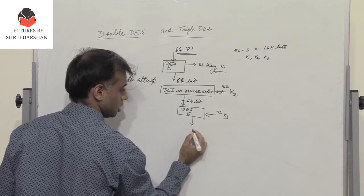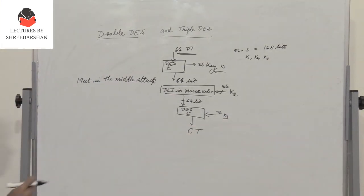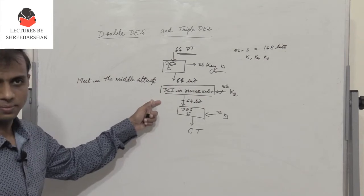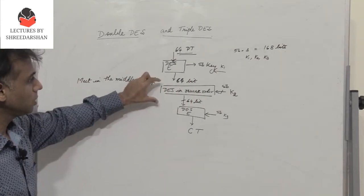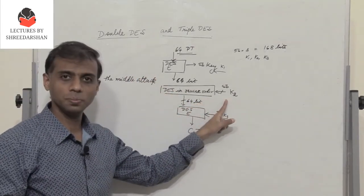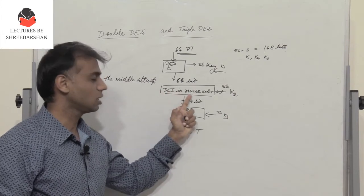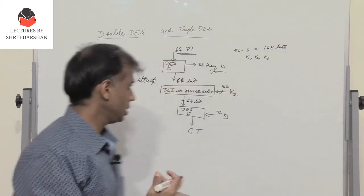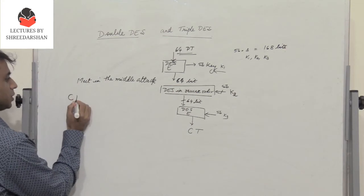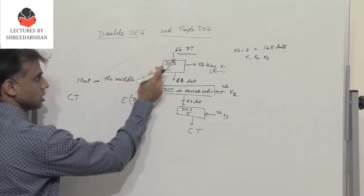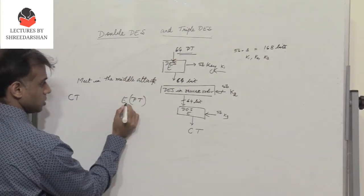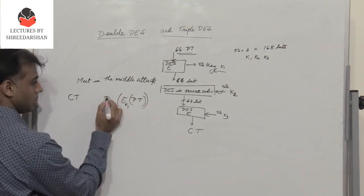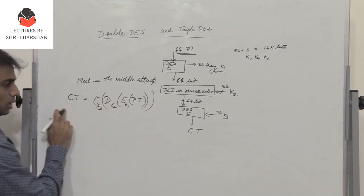We know that when the encryption algorithm is run in reverse order, it is nothing but decryption. So in the second stage we perform decryption using key K2. Then that 64-bit data is again given to the DES encryption algorithm, which uses the remaining 56 bits K3, to produce the final ciphertext. So to get the ciphertext: we encrypt using K1, decrypt using K2, and encrypt again using K3.